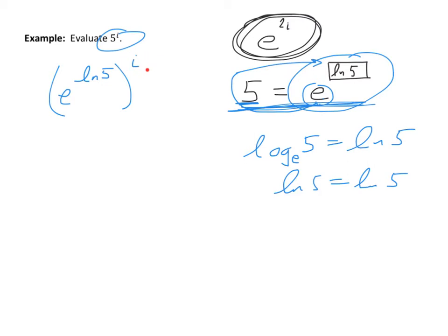So the secret to dealing with these problems where the base isn't e is to change the base to e. So now this problem, instead of being 5 to the i, is e to the natural log 5, all raised to the i. I replaced the 5 with e to the natural log 5. Then, when a power is raised to another power, I multiply those powers together. This becomes e to the natural log(5)·i.